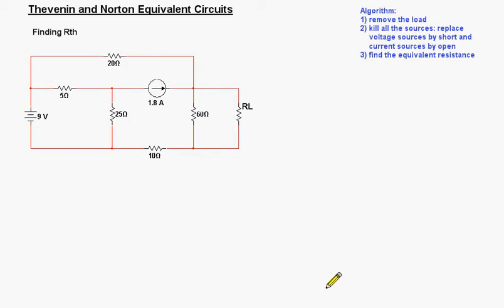So it's another way. It sometimes is easier than using the short circuit method that we use to find i-Norton. So let's follow this algorithm here on the right side of the video.